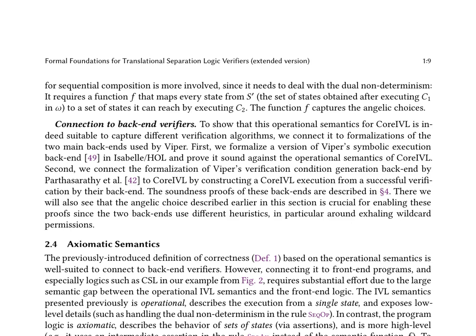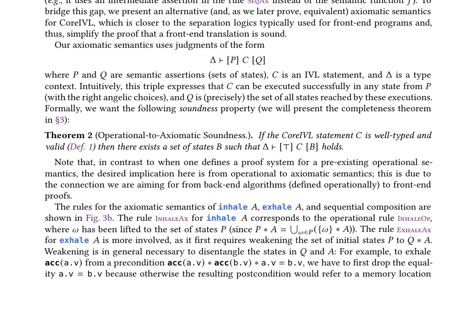The paper also introduces an alternative axiomatic semantics for core IVL, which uses judgments of the form Δ ⊢ {P} S {Q}, where P and Q are semantic assertions, S is an IVL statement, and Δ is a type context. The soundness property from operational to axiomatic semantics is established, showing that if a core IVL statement is well-typed and valid, then there exists a set of states such that the corresponding axiomatic judgment holds.